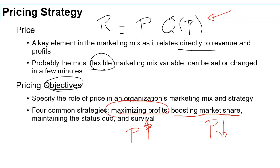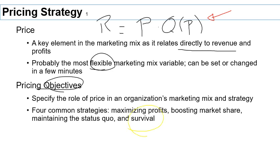There are other objectives beyond these two most popular goals. You might be trying to maintain the status quo — keeping things as they are right now. And the most basic pricing objective is simply to survive — setting a price that at least covers your costs to keep operating.